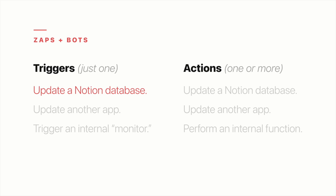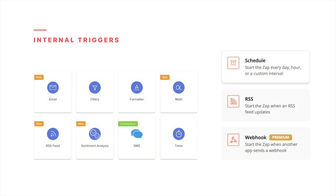Examples of Notion-triggered events include updating a meeting within an events database or adding a new contact within a contacts database. You can also trigger zaps and bots from other apps — in which case your actions would occur in Notion. Examples here include favoriting a song in Spotify, updating a contact in Salesforce, or creating an event in Google Calendar. Zapier and Automate.io also include internal monitors that can trigger your zaps and bots, including a recurring schedule or receiving emails.